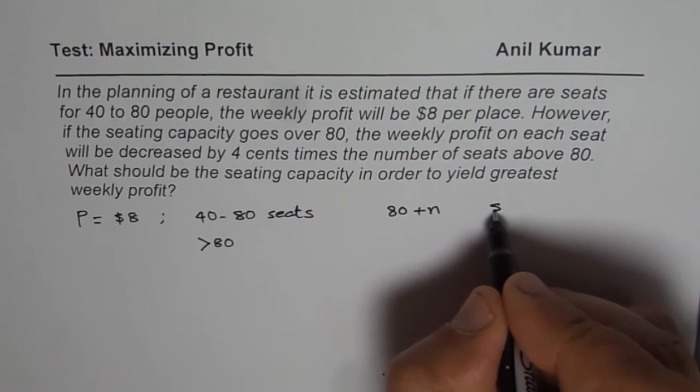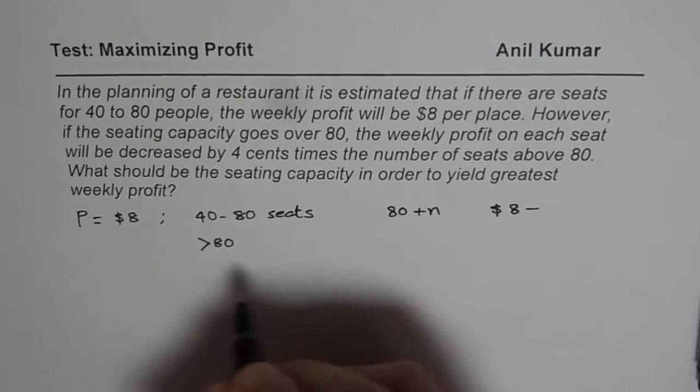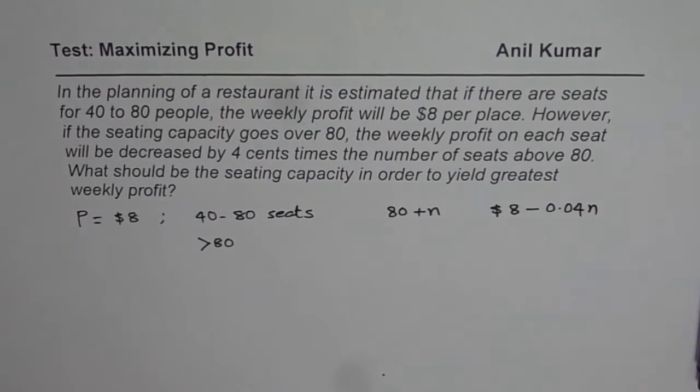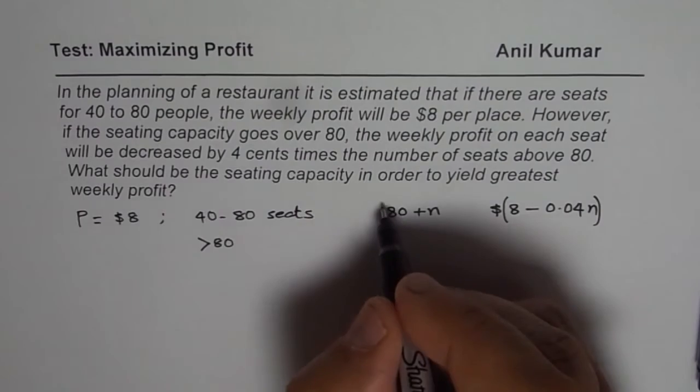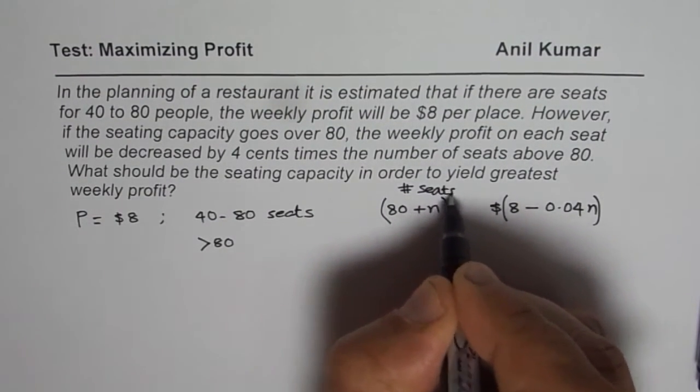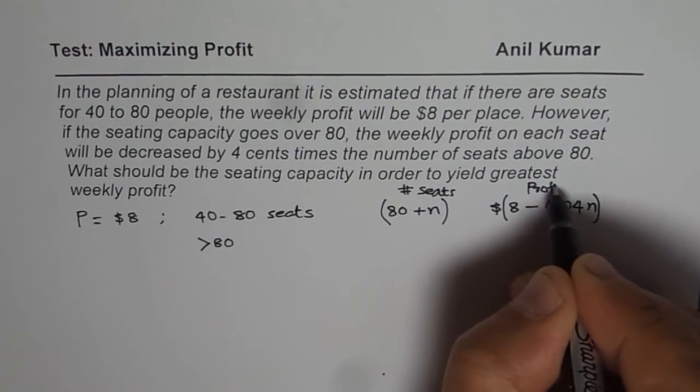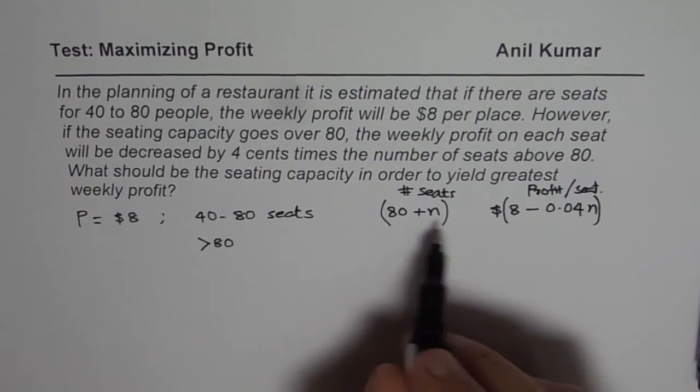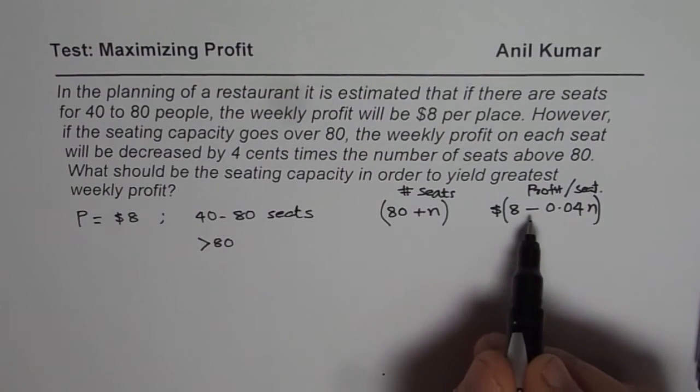the profit in dollars will go down by 8 minus 0.04 times N cents. So that is the amount by which the profit per seat goes down. And these are the total number of seats. So these are your number of seats. And that is the profit per seat. So this is profit per seat. So now in this scenario, what should be the expression for profit? Profit should be number of seats into profit per seat.